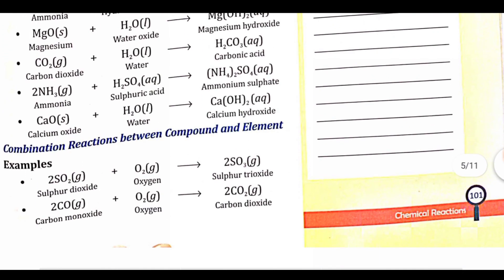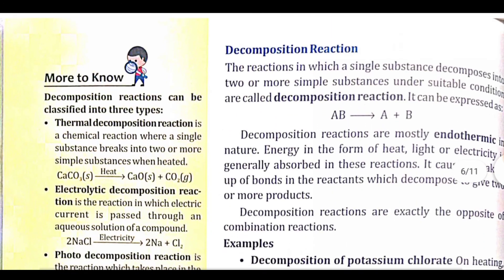Combined reactions between compound and element — when compounds react with other elements, we create a new compound. Examples: 2SO₂ + O₂ → 2SO₃ (sulfur dioxide and oxygen give sulfur trioxide). 2CO + O₂ → 2CO₂ (carbon monoxide and oxygen give carbon dioxide). These are synthesizing examples.